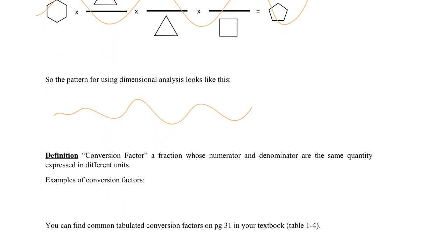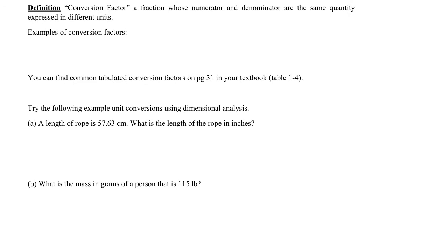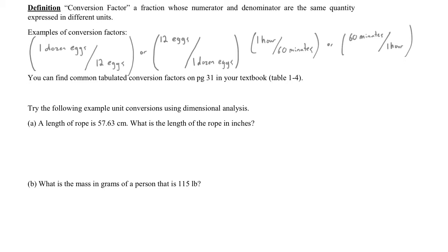Conversion factors are ratios or fractions whose numerator and denominator are equal to the same thing — they're essentially the same quantity expressed in different units. Here are some examples of conversion factors. One really important feature is we can write them down with the numerator and denominator in either position. This allows us to control how we use the conversion factor in transforming a given unit into a desired unit.